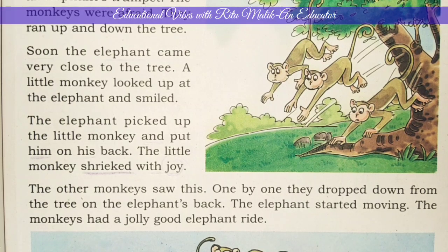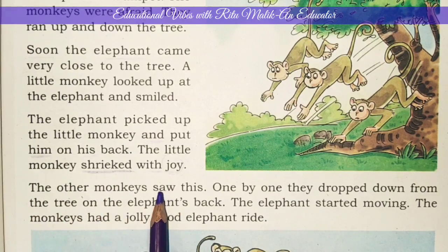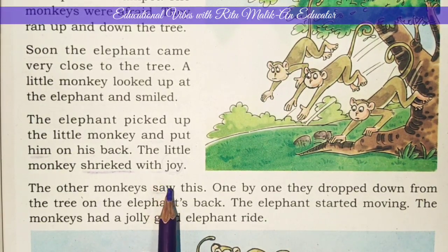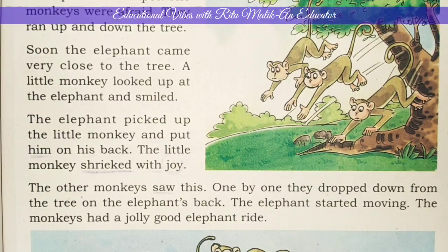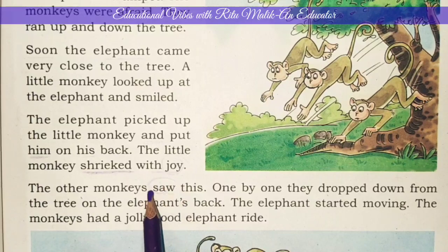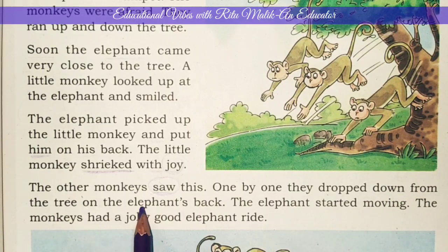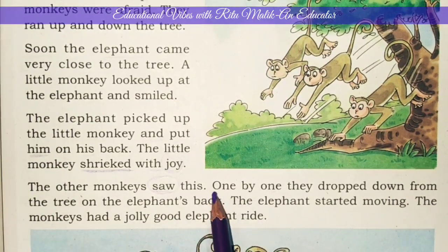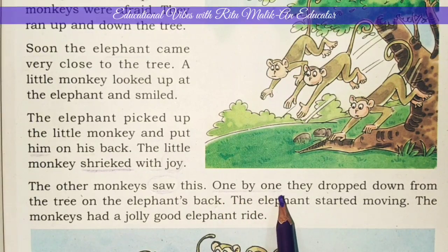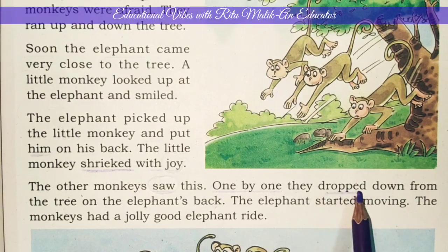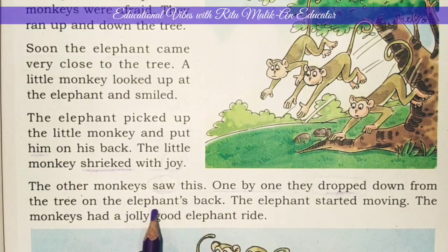The other monkeys saw this. 'Saw' — देखा। 'Saw' 'see' की second form है, मतलब देखा। One by one they dropped down from the tree onto the elephant's back. एक के बाद एक — 'one by one' — वे पेड़ से कूद गए हाथी की पीठ पर। 'Drop' मतलब कूद गए।